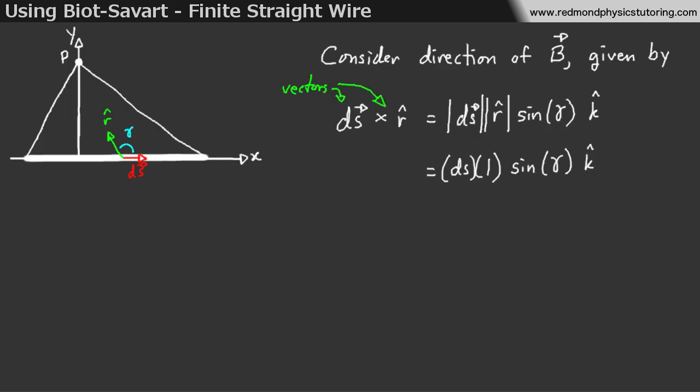When you have a cross product, the magnitude of the cross product is given by the first term times the second term times sine of the angle between them. So, I'm calling the angle between dS and r-hat gamma. So, we just get dS times 1, because r-hat is a unit vector, times sine of gamma k-hat, or we get just dS sine gamma k-hat.